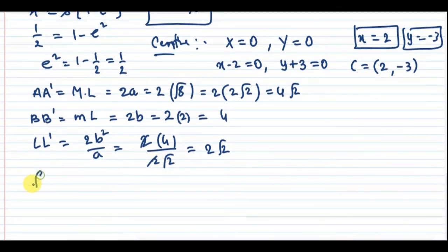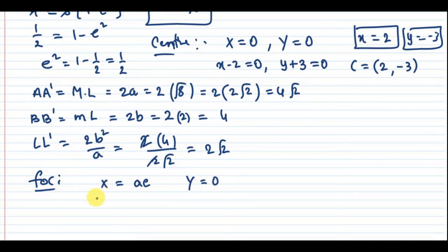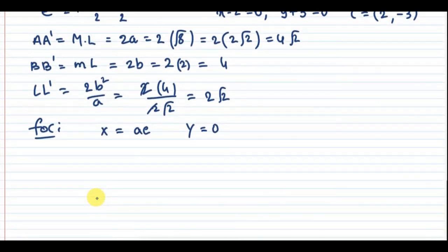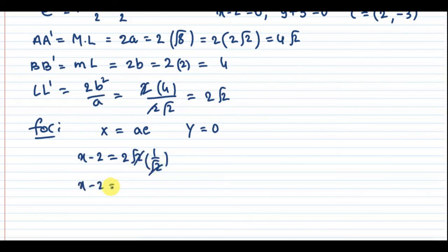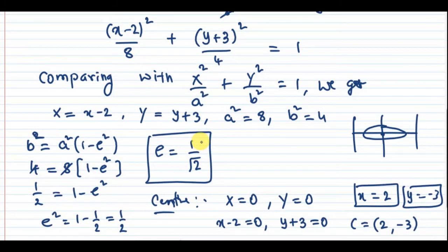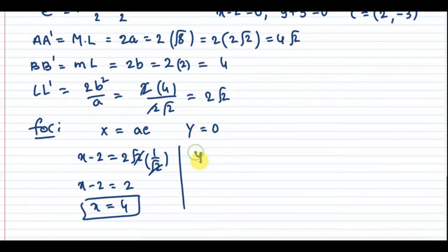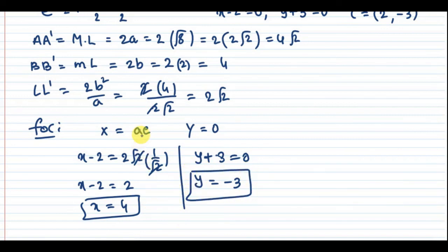For the foci, in shifted coordinates the foci are at X = ±2√2, Y = 0. Converting back: x - 2 = ±2√2 gives x = 2 ± 2√2, and y + 3 = 0 gives y = -3. Also, length of major axis = 4A = 4√2. The foci S = (2 ± 2√2, -3).